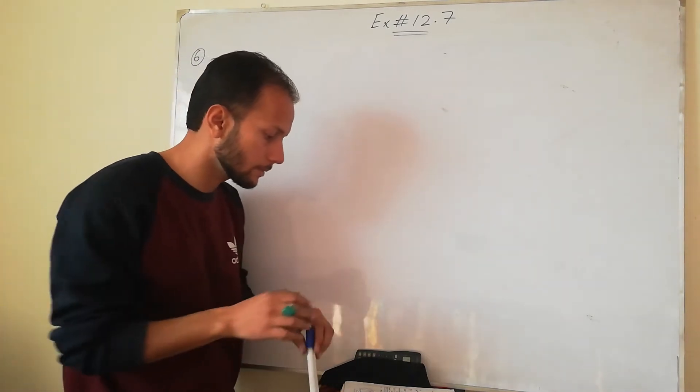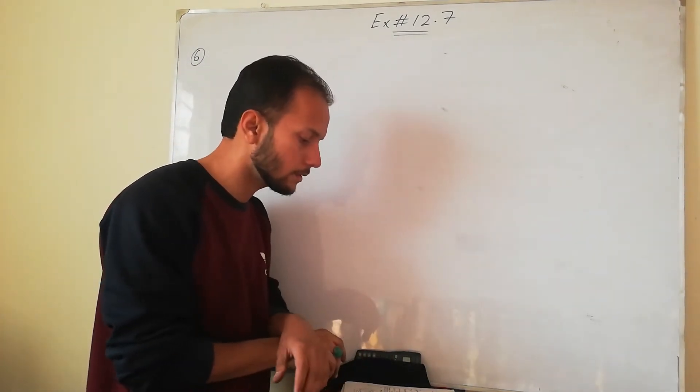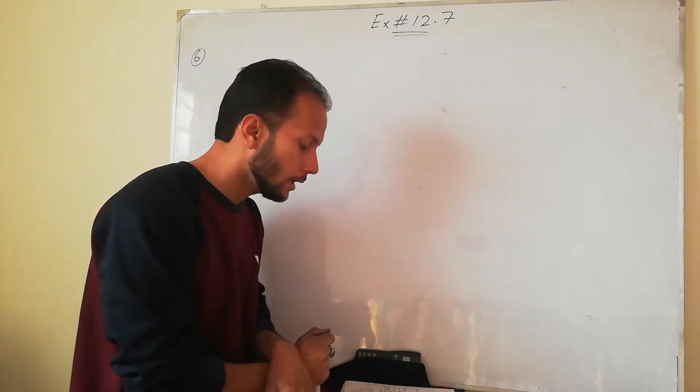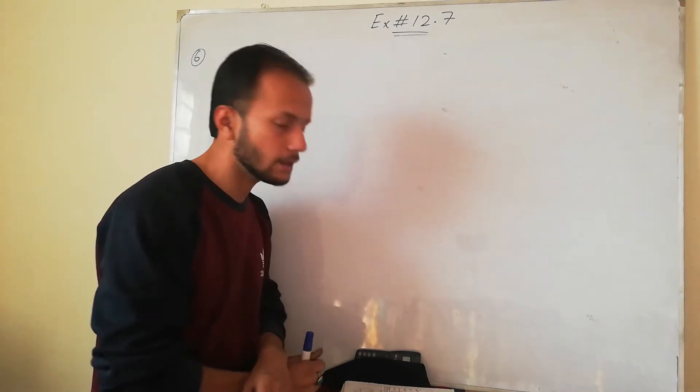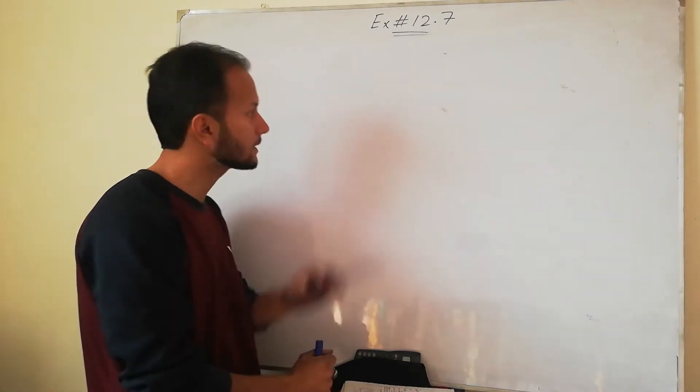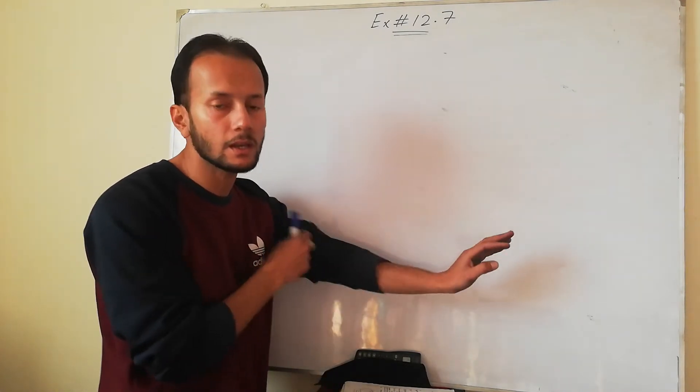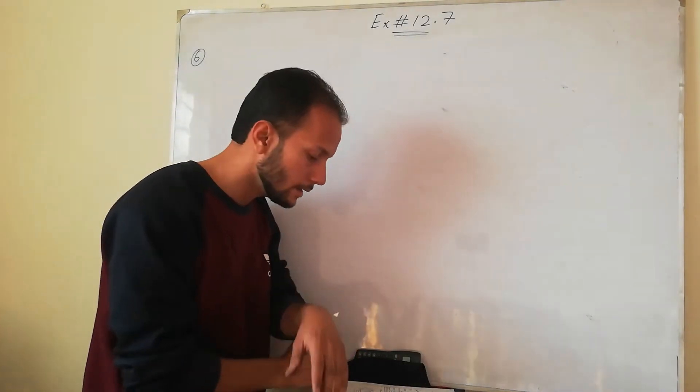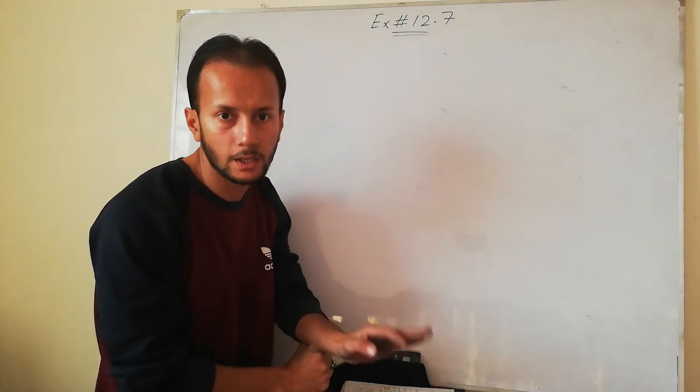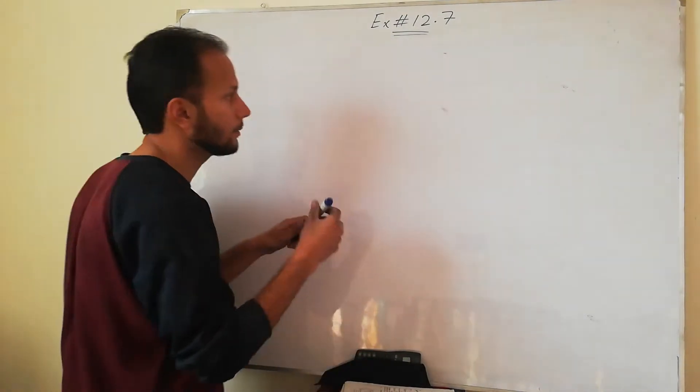The question is that one side of a triangular garden is 30 meters. So it says that one side value is given. Now I don't write sides because I have not done proper labeling. This is A side, B or C. So first of all, we will properly label it.